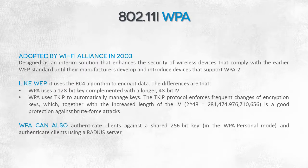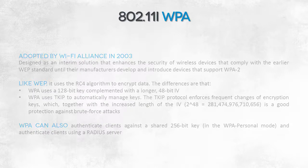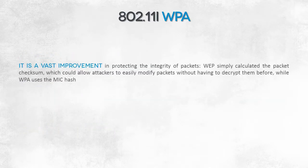WPA verifies the identity of users, authenticating them not only against the pre-shared key but also using the already mentioned RADIUS server. The last problem that was noticed and fixed related to data integrity — instead of a CRC checksum, the protocol uses a cryptographic hash function, which makes it more difficult to modify packets without affecting checksums.